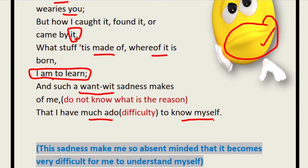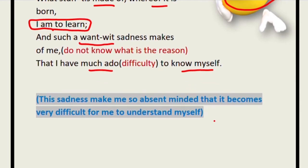Antonio says such sadness makes it very difficult to know his own self. As he does not know the reason behind his sadness, it is also very difficult to know himself. This sadness makes him absent-minded — he cannot enjoy with his friends. 'I have much ado to know myself,' he says, meaning he is absent-minded, sad, and tired of his own self.